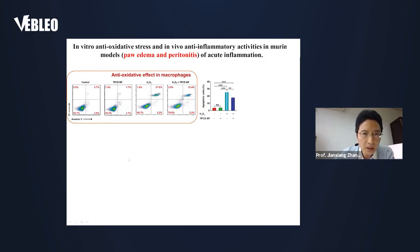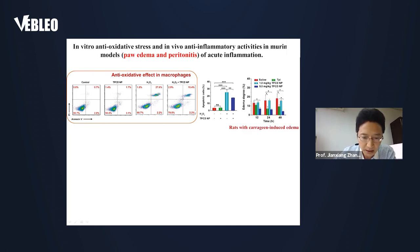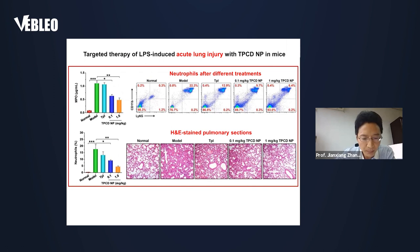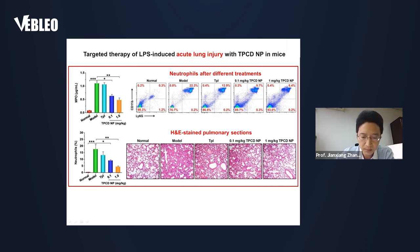The anti-oxidative stress properties of TPCD nanoparticles (TPCD-NP) were first demonstrated in macrophages. Then the in vivo anti-inflammatory activity of TPCD nanoparticles was substantiated in acute inflammation models of paw edema and peritonitis in mice. We also found that TPCD nanoparticles can effectively inhibit LPS-induced acute lung injury in mice, thereby reducing neutrophil infiltration, improving MPO levels, and improving pulmonary structure.